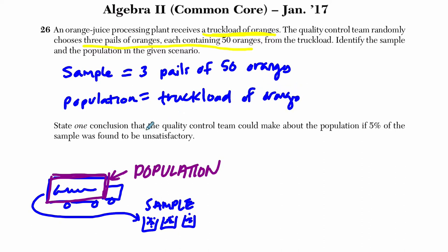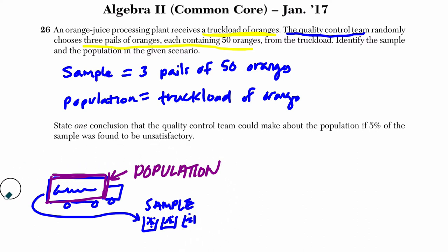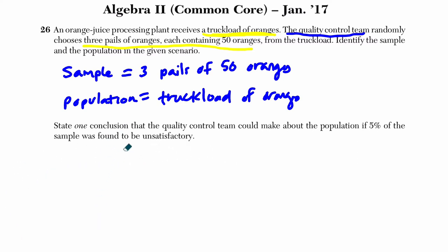That's all the oranges we're looking at. We want to know something about those oranges on that truck — that's got to be our population. How do I know they want to say something about the oranges on that truck? It's because they have this quality control team and they're taking samples from the oranges — they want to know something about the oranges in that truck. And if we read ahead in this question, we can see that yeah, they definitely want to know about that truck.